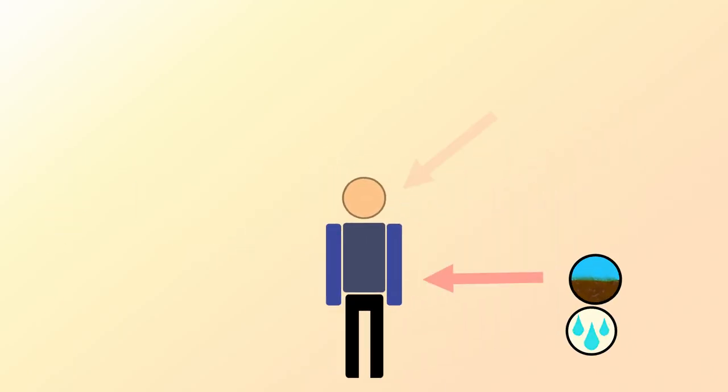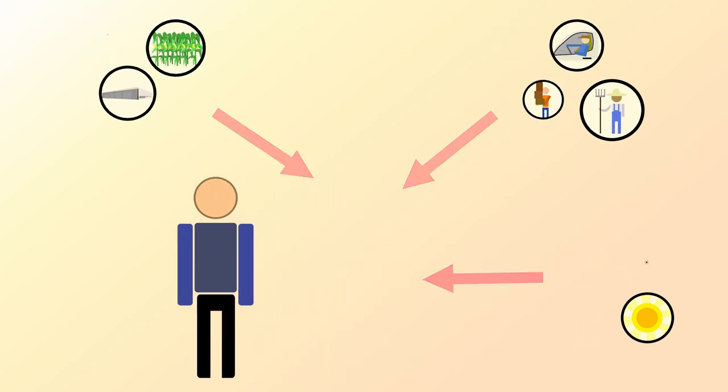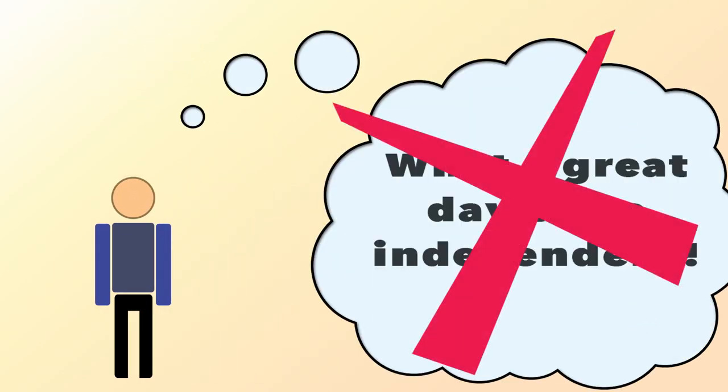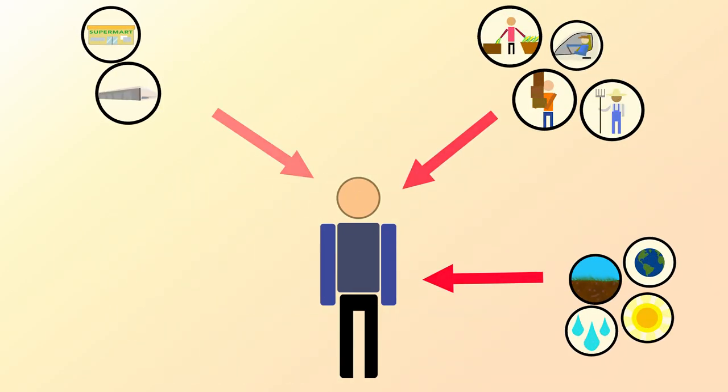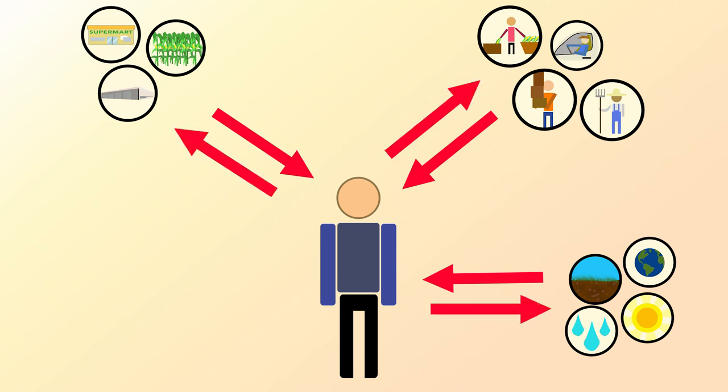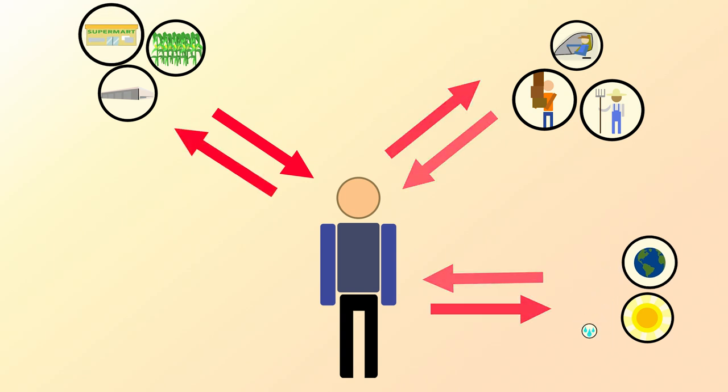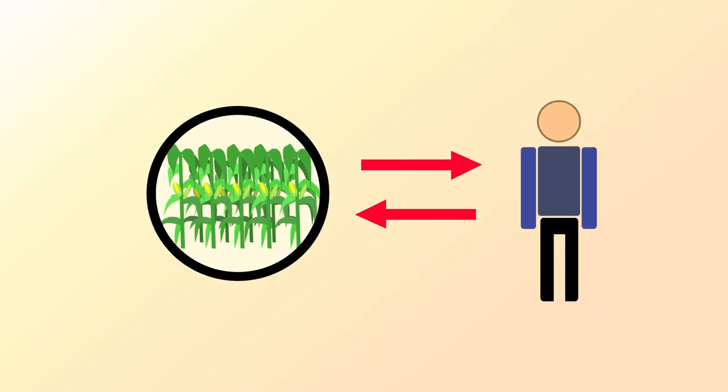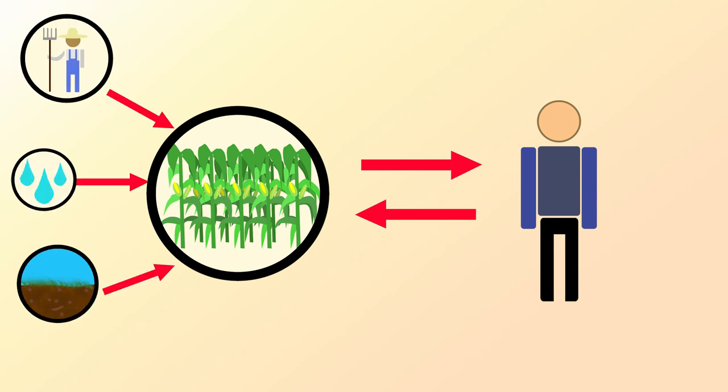As it turns out, John is depending on a lot, so he may not be as independent as he thinks. Not only that, but all of these people also rely on John to buy the corn to ensure their livelihoods. Even the corn relies on John's support so that the farmer can continue to cultivate it and help it grow.